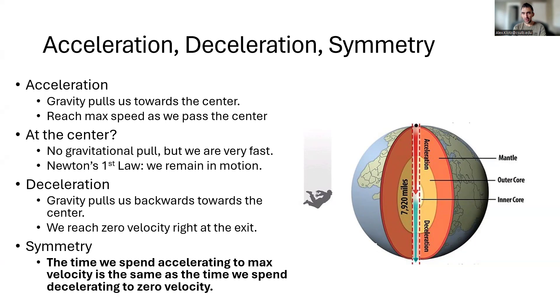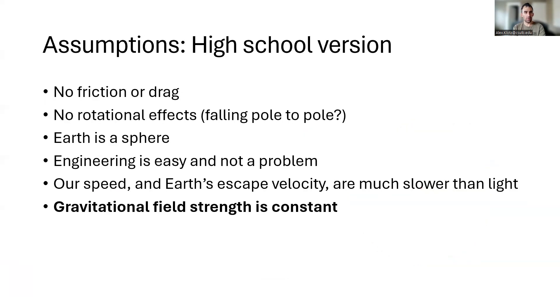So because we can't actually dig a tunnel like this and drop something in and do the experiment, we have to make assumptions when we solve this problem. We ignore friction and drag. We start by ignoring the rotation of the earth, or we can say we're falling from pole to pole. We're assuming the earth is a sphere. We're assuming this tunnel actually exists and we're not falling close to the speed of light.